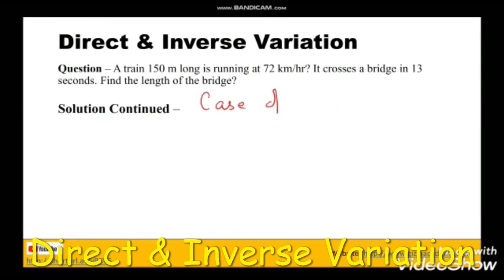Now this question is a case of direct variation. Why? Because the more distance to be covered, the more time it will take. So we shall form a table showing x and y values. X will represent the distance and y will represent time.